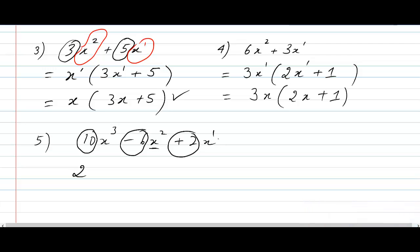The largest number that goes into 10, 6, and 2 is 2. Then look at the letters to find which one has the lowest power: x to the power of 3, x to the power of 2, and x to the power of 1 — the smallest is x to the power of 1, so those are my factors. Next: 2 times what gives you 10 — that's 5. I have x to the power of 1 but need x to the power of 3, so I'm missing an x squared, and adding them gives x to the power of 3. Then 2 times what gives minus 6 — it has to be minus 3, because 2 times minus 3 is minus 6. x to the power of 1 times what gives x to the power of 2 — we're missing an x to the power of 1. Then 2 times what gives 2 — that's 1. And I have x to the power of 1 and want x to the power of 1, so I don't need any more x's.